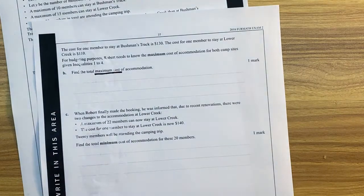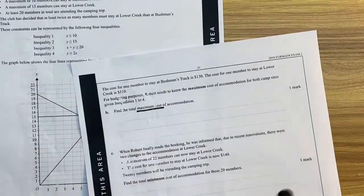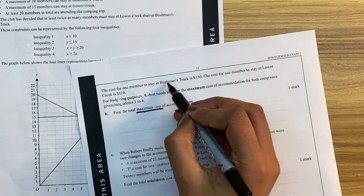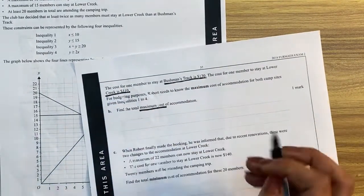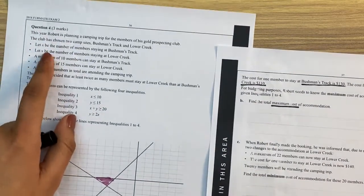So if we want to find the maximum, we're firstly going to have to find what our objective function is. So if we look here, it's given to us. So Bushman's Track is 130, Lower Creek is 110. So we know Bushman's Track is the x-axis.